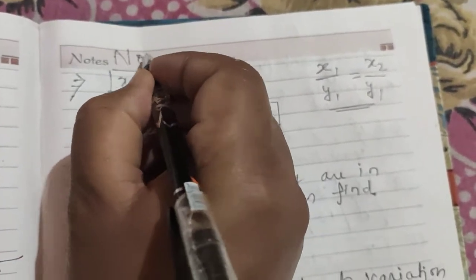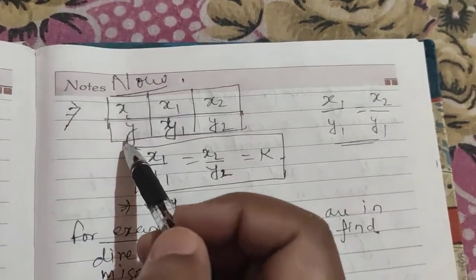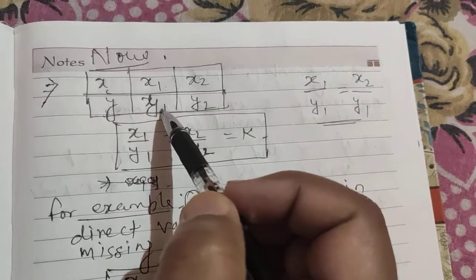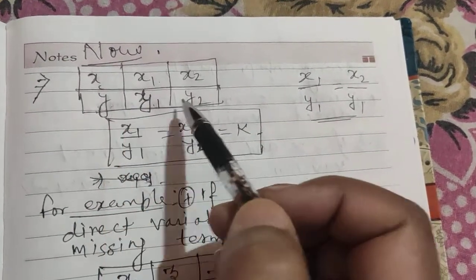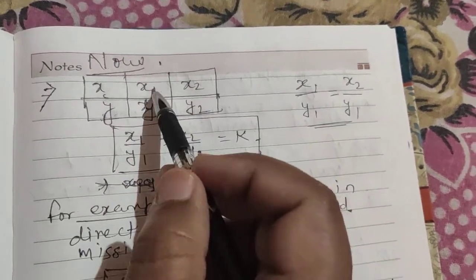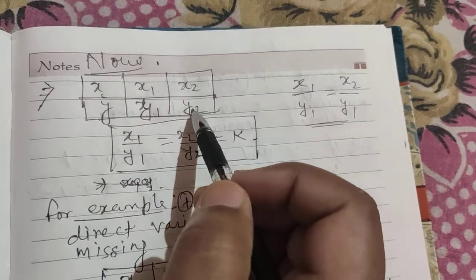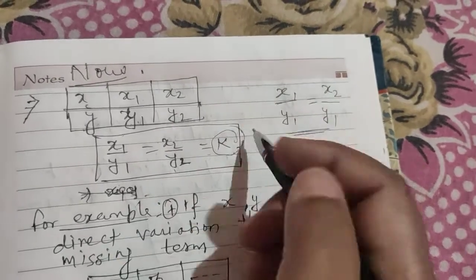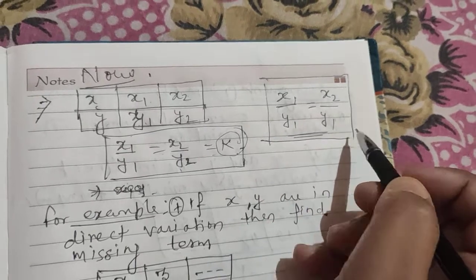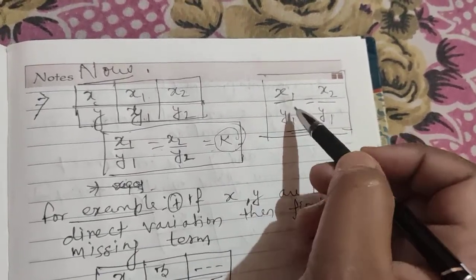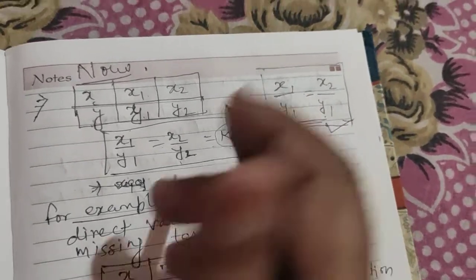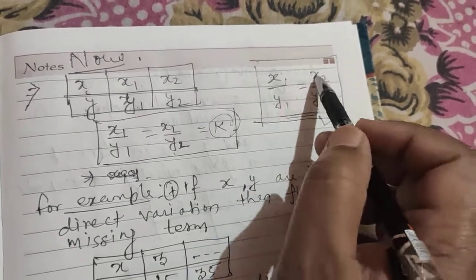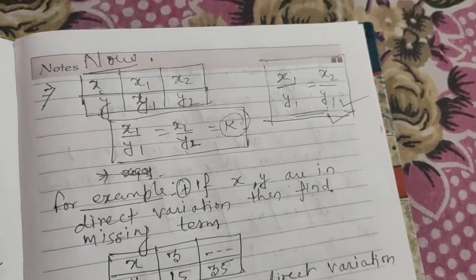Now we form a formula. If two quantities x and y are in direct variation, suppose when x equals x1 then y equals y1, and when x equals x2 then y equals y2. Since they are in direct variation, the ratio of the two quantities will be the same in both cases. Therefore: x1/y1 = x2/y2 = k, a constant of variation. Using this formula, there are four quantities — x1, x2, y1, y2 — and if three values are given, you can find the fourth.